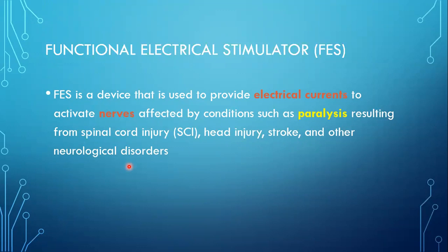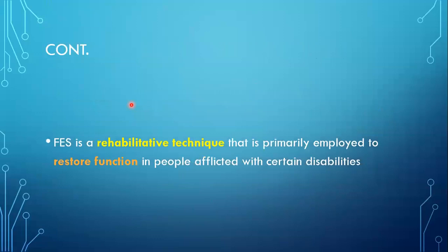Paralysis means the complete or partial loss of muscle function. For those with paralysis, the nerve will be affected. What the FES device does is provide electrical pulses to the affected nerve area so as to restore the function of the affected nerves.